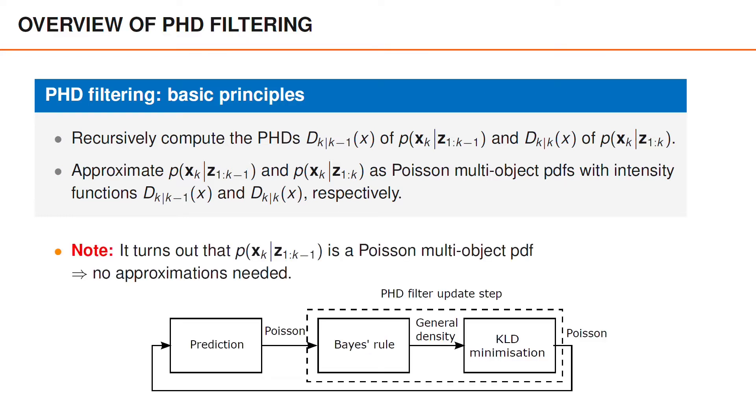Now, interestingly, for the standard motion model, and given that the posterior at time k-1 is a Poisson point process, the predicted distribution is actually also a Poisson point process, and, naturally, we don't need to introduce any approximations to ensure that the predicted distribution is a Poisson point process.